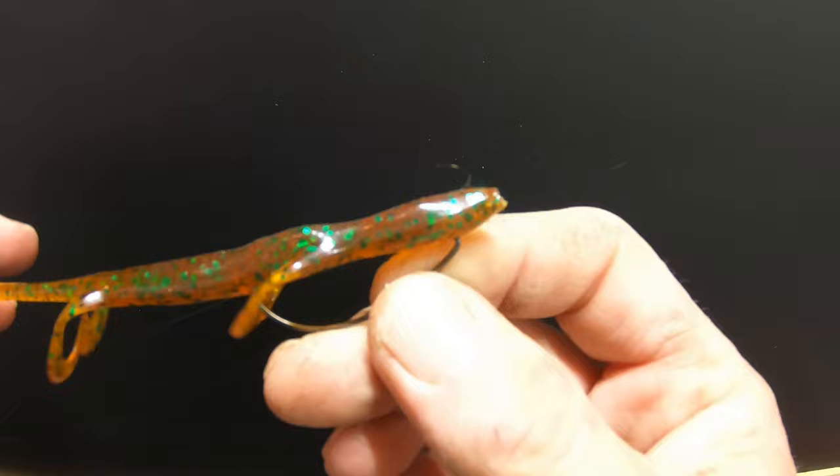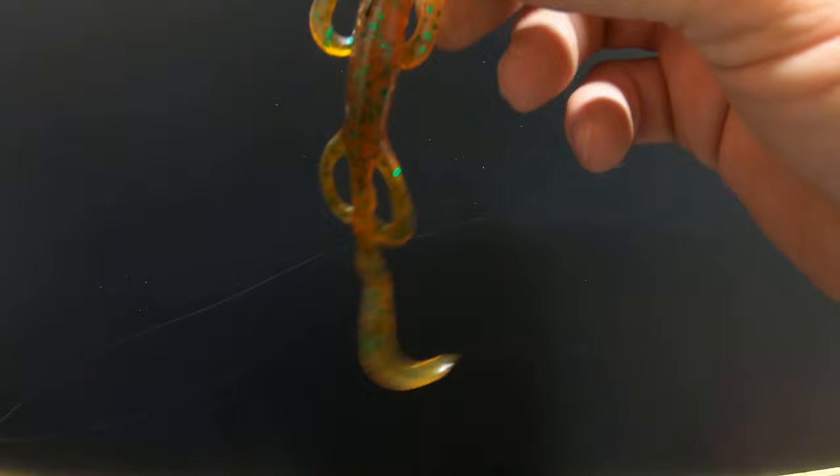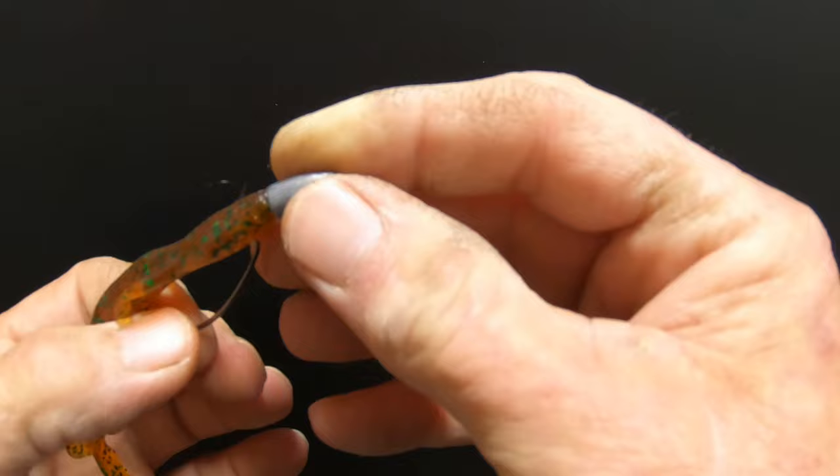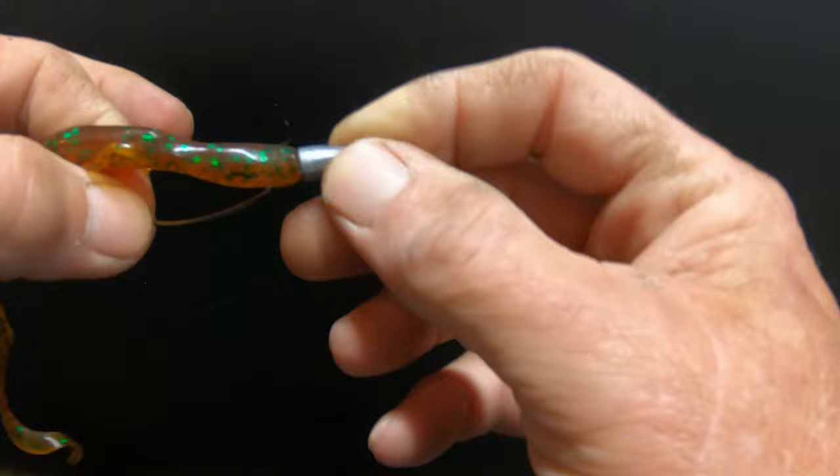And this is a Texas rig on a 6-inch lizard. And once you throw it, you've got your line tied. Your sinker's sitting there like that.